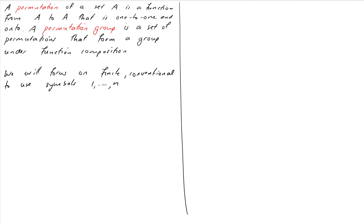The most straightforward way of writing down a permutation is to write down your set of objects in the top row, then write where each number gets mapped to underneath. So here, looking at a permutation of 1 to 4: 1 gets mapped to 2, 2 gets mapped to 3, 3 gets mapped to 1, and 4 gets mapped to 4. To apply it, you look up the top row and map it down to the bottom row.